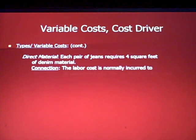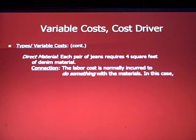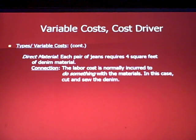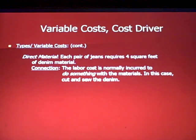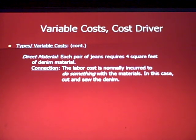The other variable cost we'll talk about here is direct material. Each pair of jeans in our example requires four square feet of denim material. You can relate direct costs and direct material: a direct cost is normally incurred to do something with the material that you buy. In this case, to cut and sew the denim. So when you buy a bunch of materials, you'll need some labor to do something with those materials.